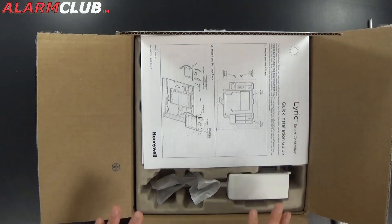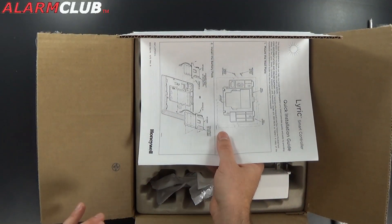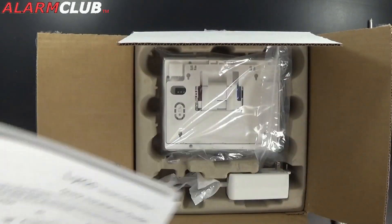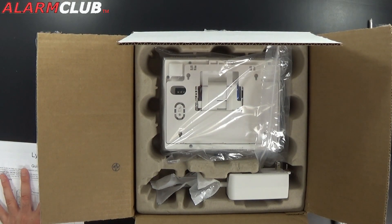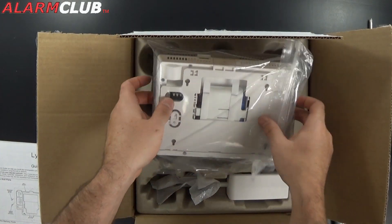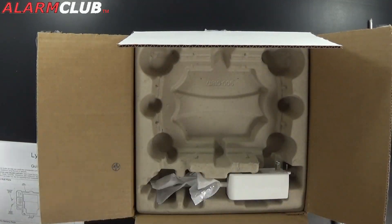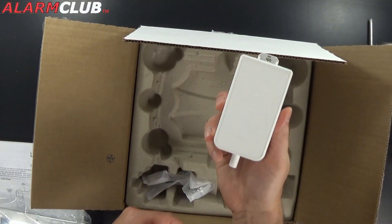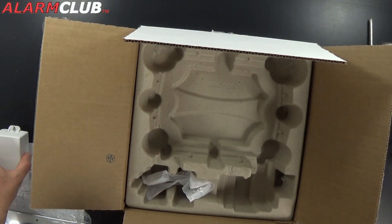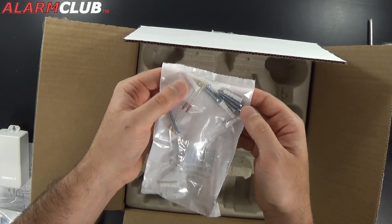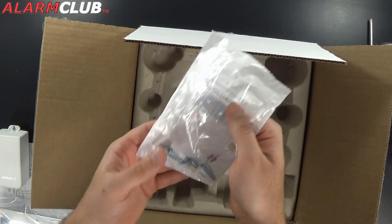Now you've exposed the insides of the Lyric Security System. So keep all your manuals and everything, there's going to be a few of them, so keep those to the side. They're good to refer back to. Go ahead and remove your panel, the new Lyric Security System panel. Remove the power transformer from the box. As well as your mounting screws, resistors, anchors, and things of that nature, your little accessory package.